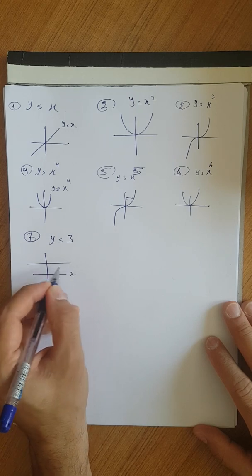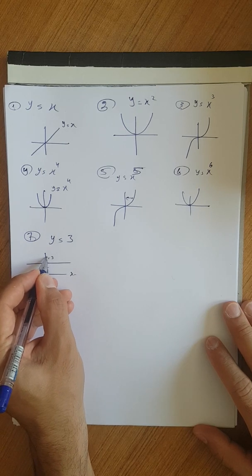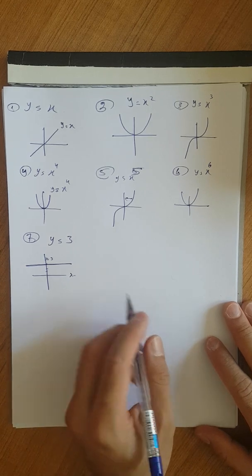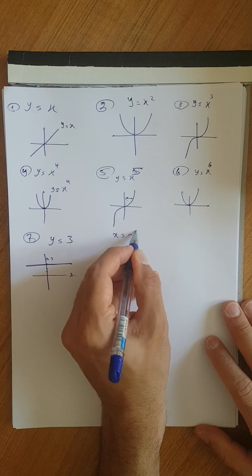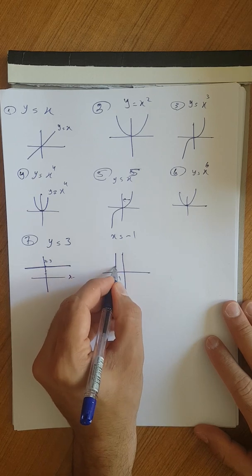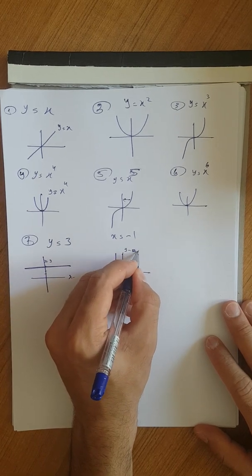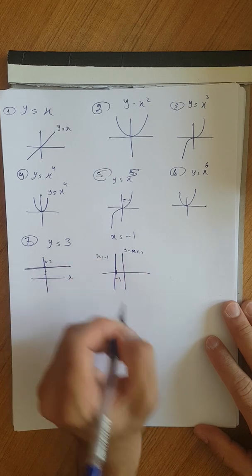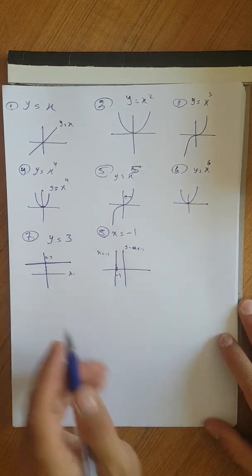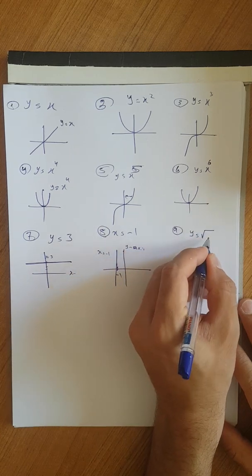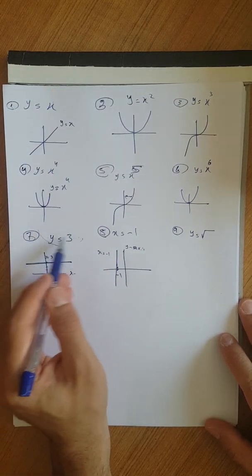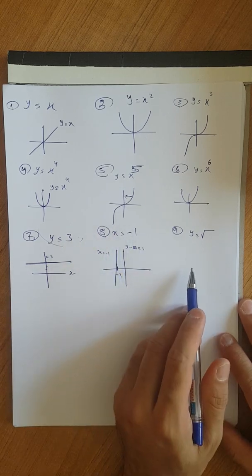Y equals 3 is a straight line parallel to the x-axis at y equals 3, with zero slope. Also, for graph number 8, if we have x equals minus 1, you have a straight line parallel to the y-axis. This is a special case: x equals minus 1. For graph number 9, y equals the square root — now we decrease the power, coming down from the integer exponents.